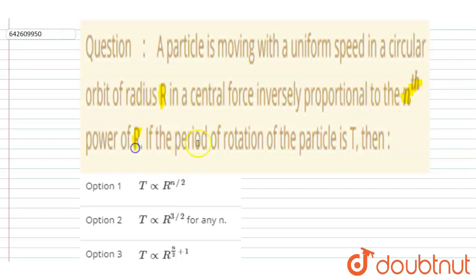If the period of rotation is T, then... So it is given that the centripetal force is proportional to nth power of R, right? So I will write here centripetal force, that is mv square by R.